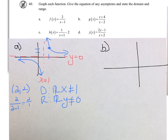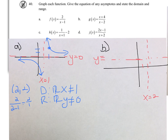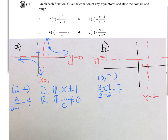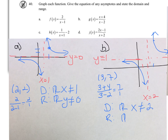For B, our vertical asymptote is at X equals 2 — it's what makes the denominator 0. Comparing the degree of the numerator and denominator, the exponents are the same, so we divide the leading coefficients and get an asymptote of Y equals 1. Picking a point, I'll plug in 3: that's 3 plus 4 over 3 minus 2, which is 7, so the graph goes up there. Domain is all reals, X cannot equal 2, and the range is all reals, Y cannot equal 1.